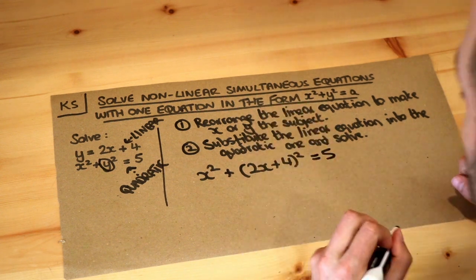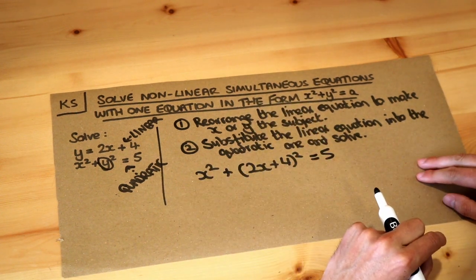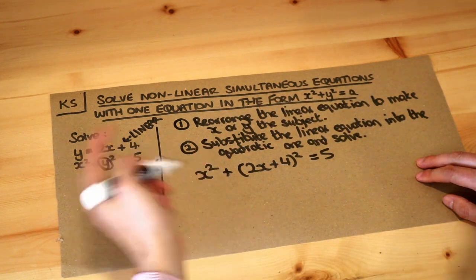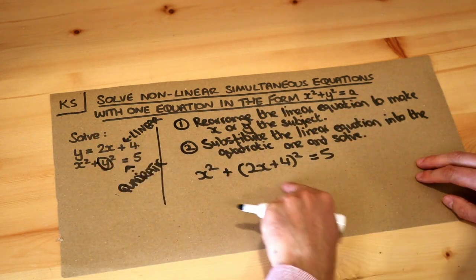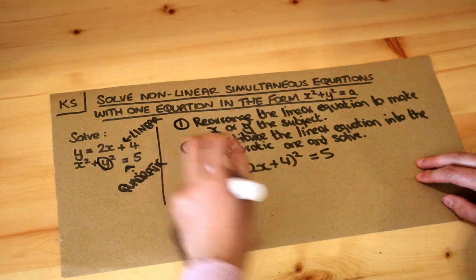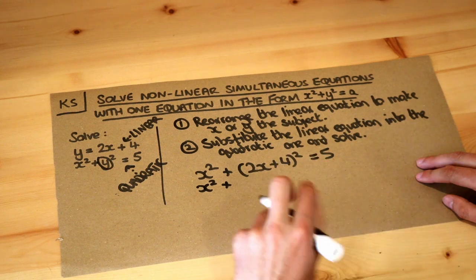We want to solve this quadratic equation. We want to get it in the form x squared plus something x plus something equals 0, so we want 0 on one side. We should expand out this bracket first. Now I'm going to do it the quick way, but you could write out this bracket twice.